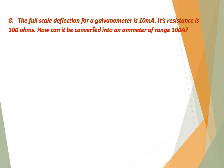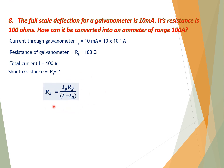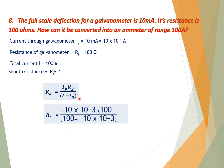Question number 8: The full-scale deflection for a galvanometer is 10 milliampere and its resistance is 100 ohms. How can it be converted into an ammeter of range 100 ampere? Given: I_G = 10 mA, R_G = 100 Ω, I = 100 A. To find shunt resistance: R_S = I_G R_G / (I − I_G). Putting in the values, we get R_S = 0.01 Ω, which is the shunt resistance needed to convert the galvanometer into an ammeter of range 100 A.